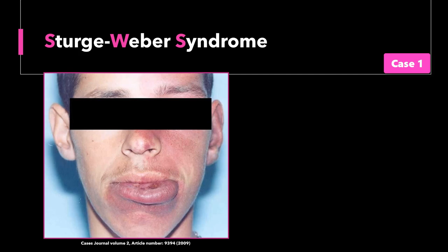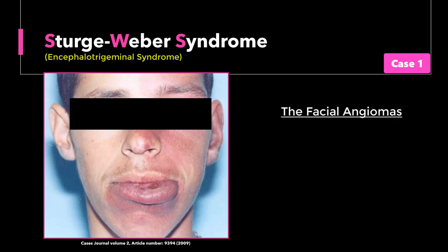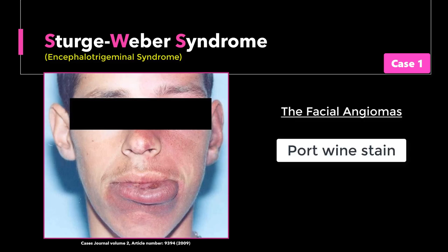Another name for this syndrome is the encephalotrigeminal syndrome, and the usual name given to these facial vascular lesions is the port-wine stain or nevus flammeus. It is a sporadic non-inherited genetic condition and it starts to present in childhood. The frequent seizures that begin in early life negatively affect the child's neurobehavioral development, although some patients could maintain a near-normal cognitive intelligence.